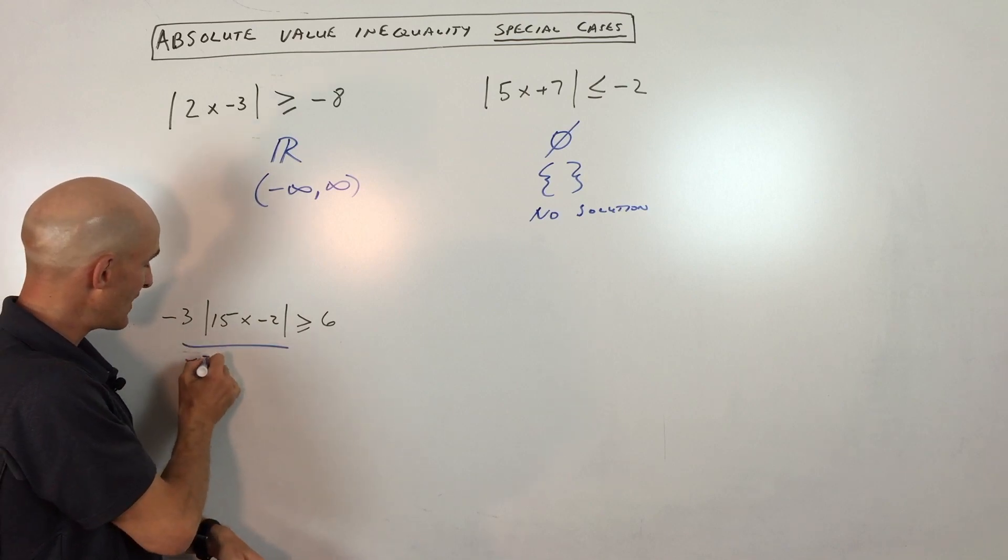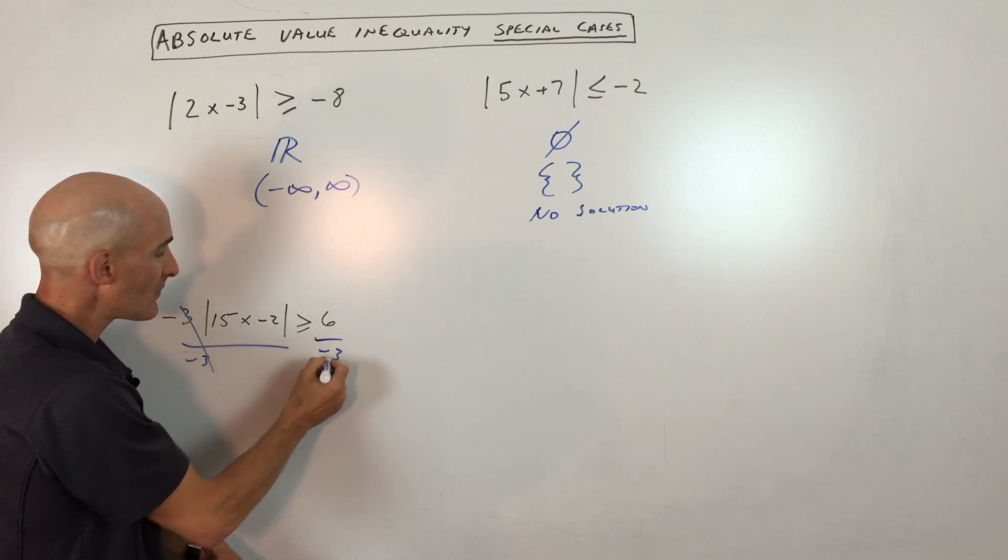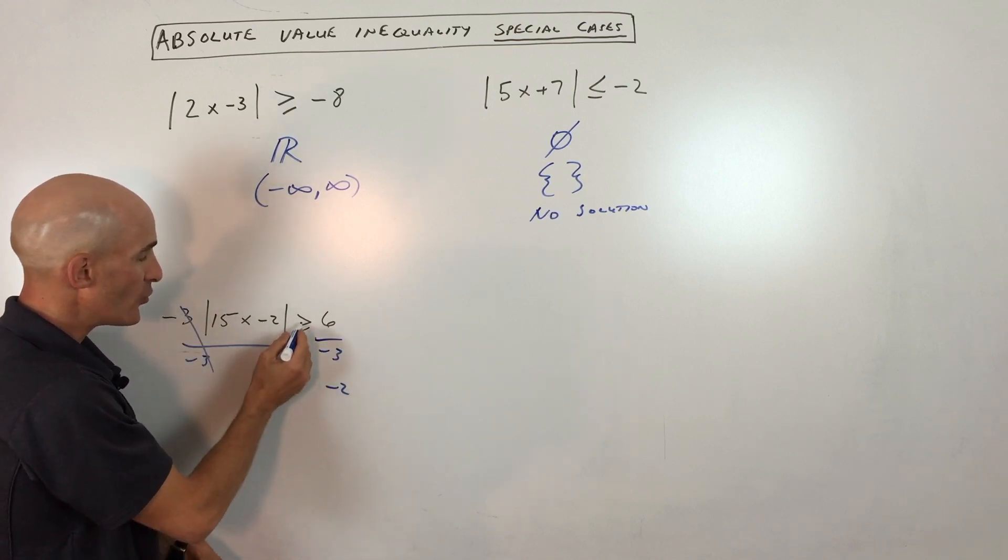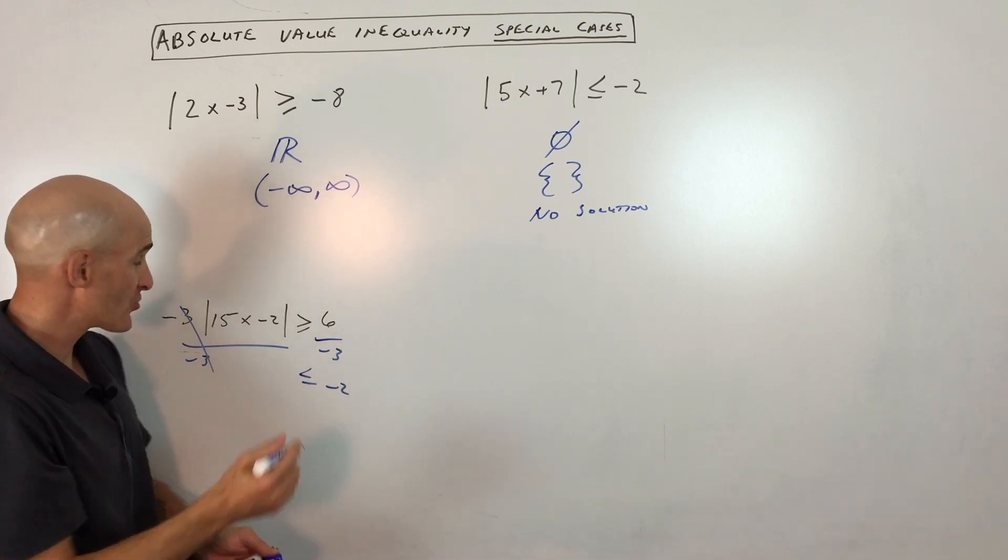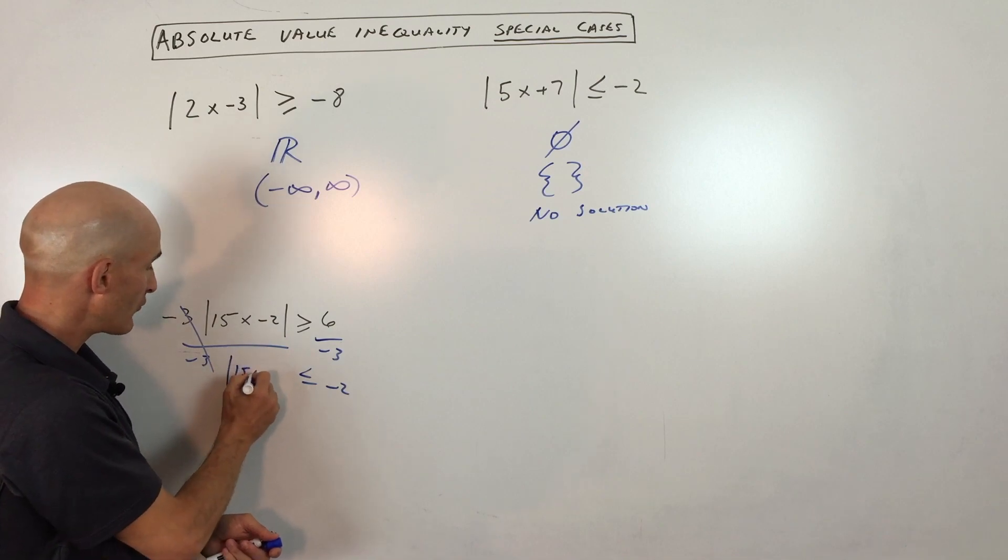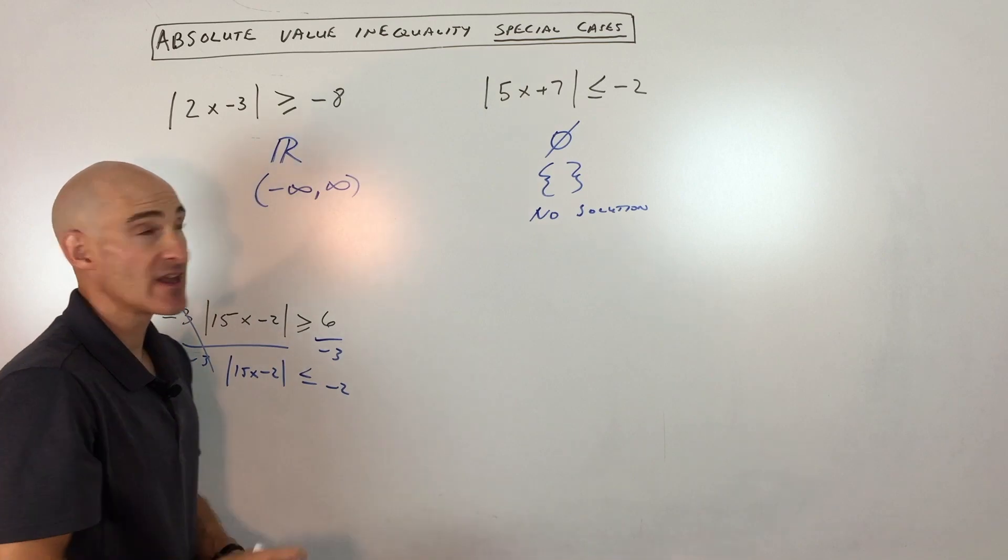So if you divide both sides by negative 3, this is going to give you negative 2. And when you multiply or divide both sides by a negative number, what happens to that inequality sign? It changes direction. So now we're left with the absolute value of 15x minus 2 is less than or equal to negative 2.